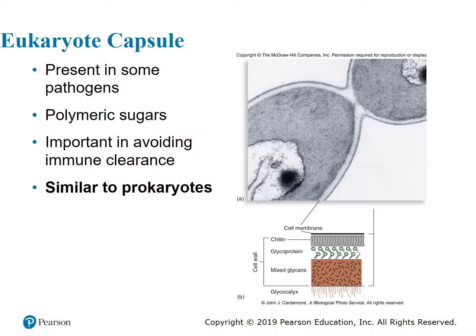From the standpoint of this course, looking at things that cause infection in humans, we're going to see that some pathogenic organisms have some form of a capsule. They can call it a capsule, a pellicle, or something else depending on whether you're referring to fungi or a specific species of protist. It's going to be mostly sugars with some proteins holding everything together, and it's all about avoiding immune clearance.